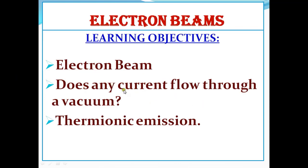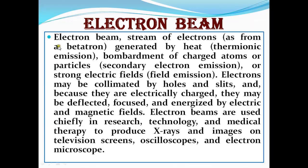In today's lesson, we are going to look at the electron beam, talk about how current flows, and also see about thermionic emission. So let's start with the electron beam — an electron beam is a stream of electrons generated by heat or the bombardment of charged atoms or particles, or strong electric fields.